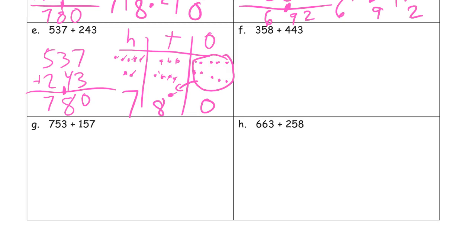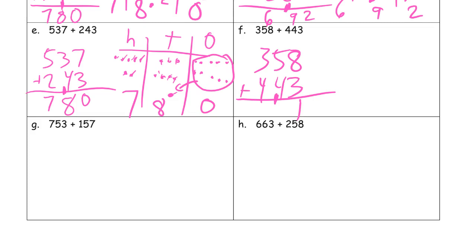Three hundred fifty-eight plus four hundred forty-three. Start with the ones digits: eight plus three is eleven — there's the ten that I compose. Five plus four is nine, and one more is ten — that's my tens digits, ten tens, so I have to compose a hundred now. And now I add my hundreds digits: three plus four is seven, and one more is eight. Eight hundred one.